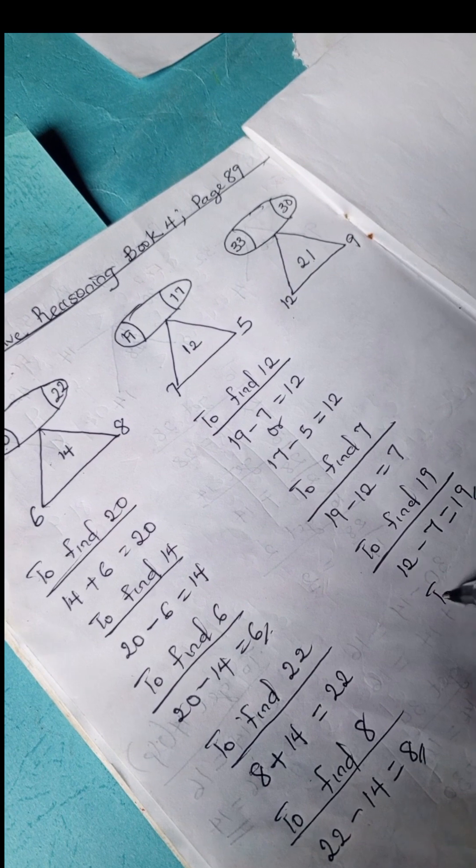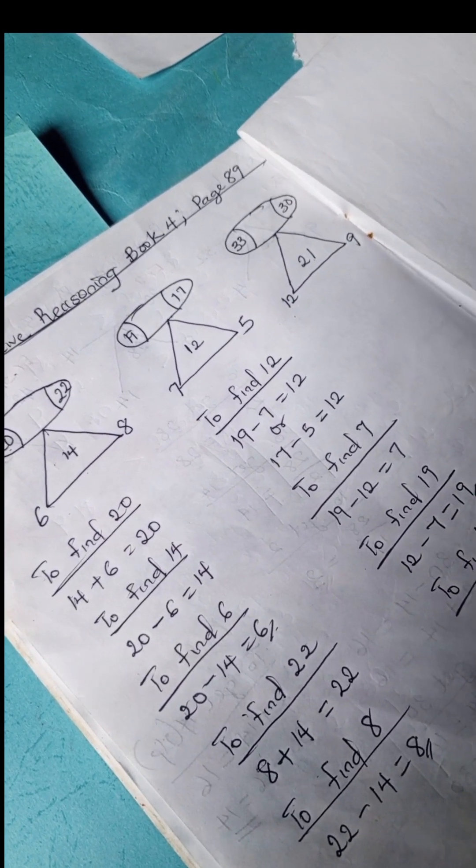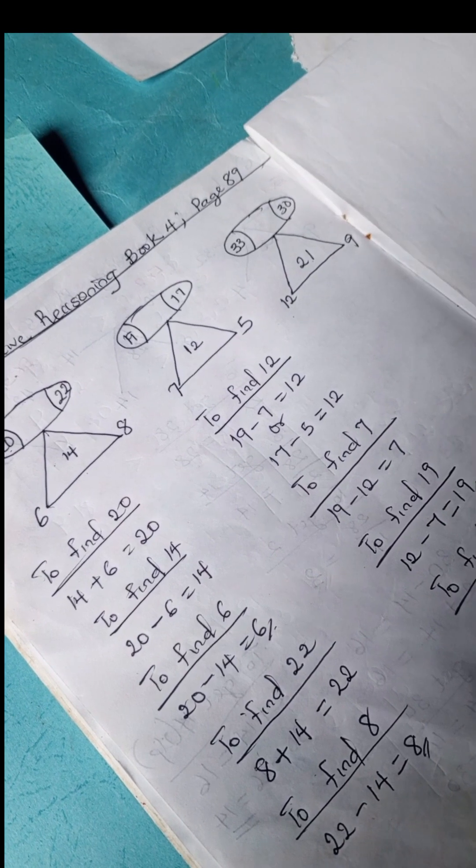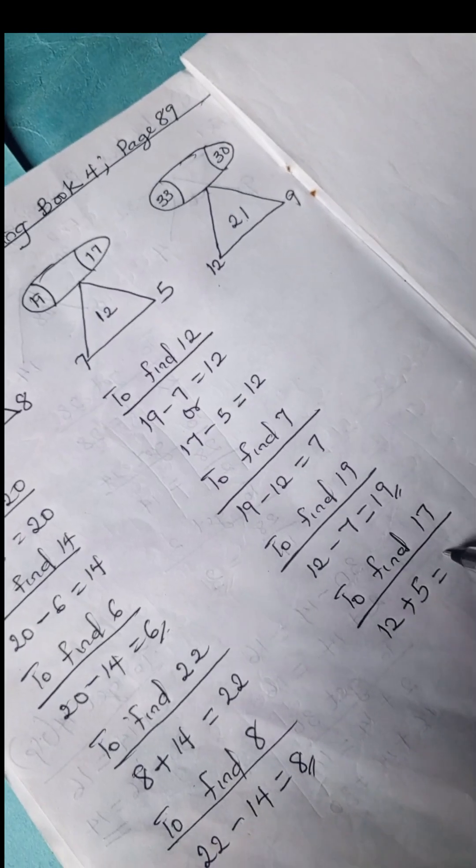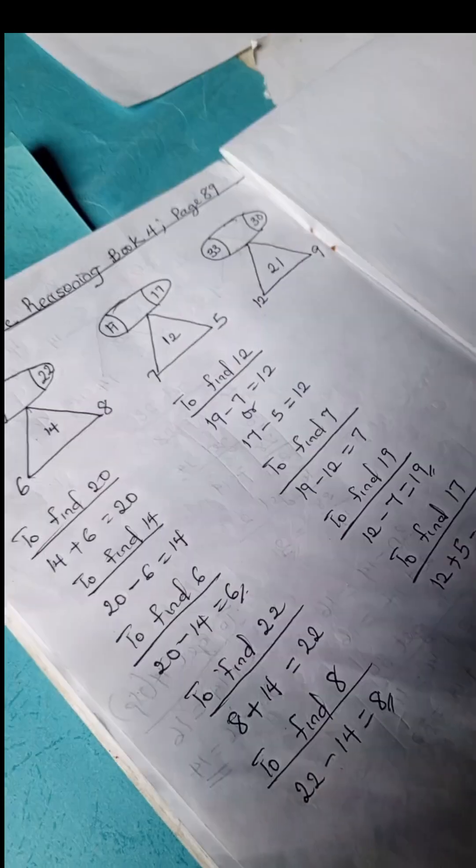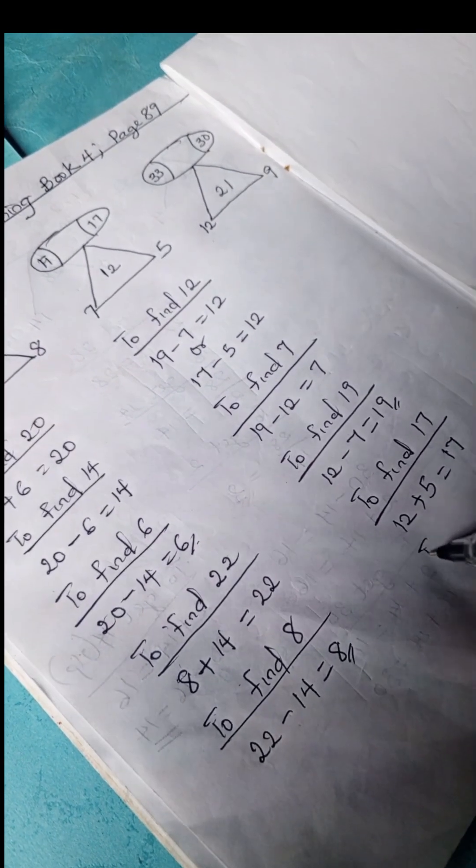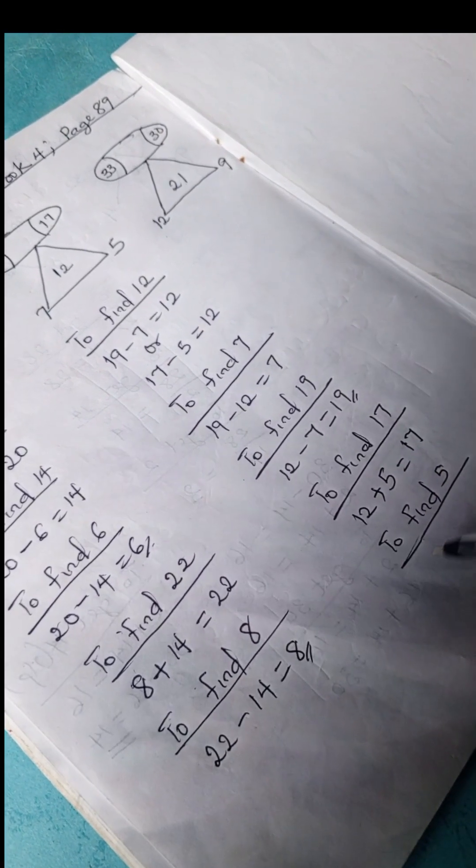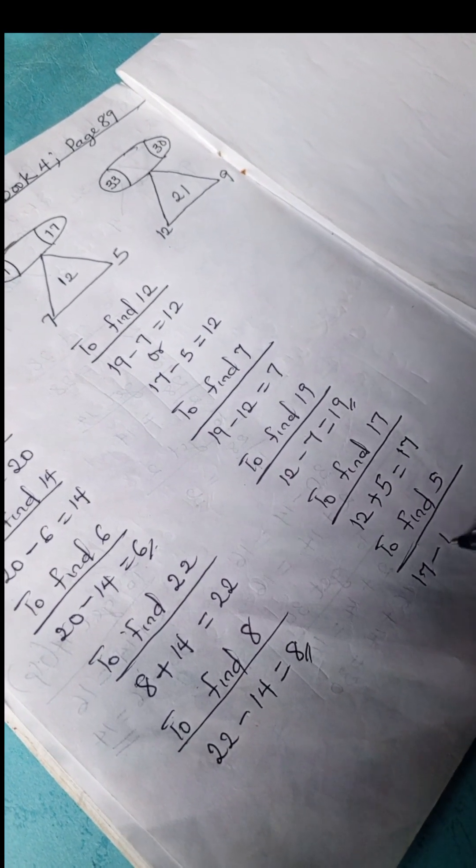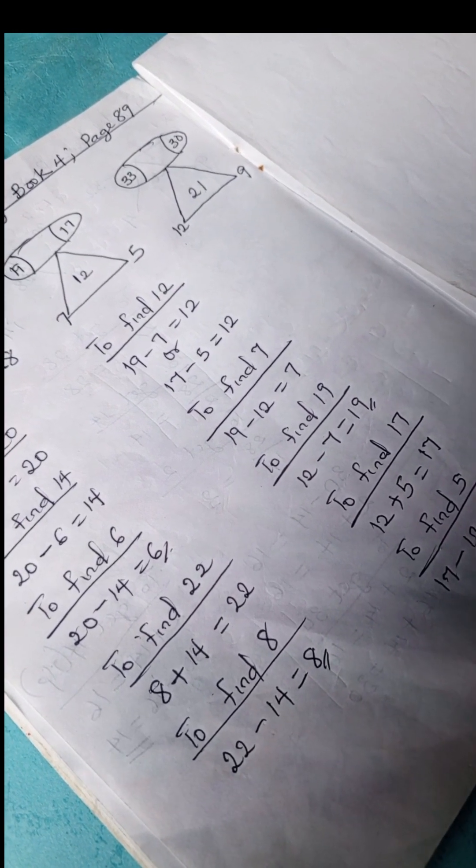So to find 12 plus 7, we have 12 plus 7 is 19. We have 12 plus 7 is 19. To find 17, 12 plus 5 equals 17. And to find 5, we have 17 minus 12 equals 5.